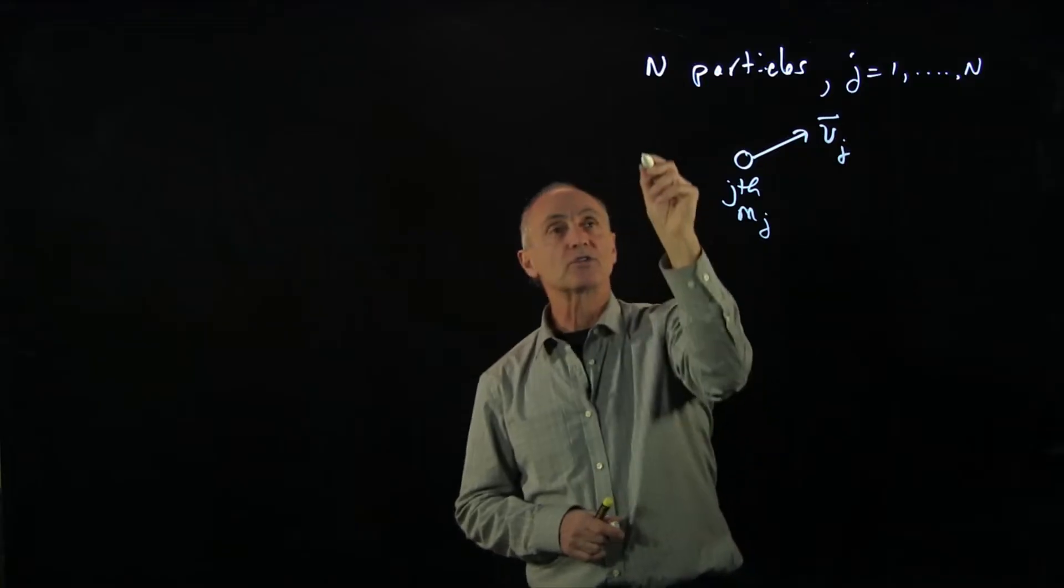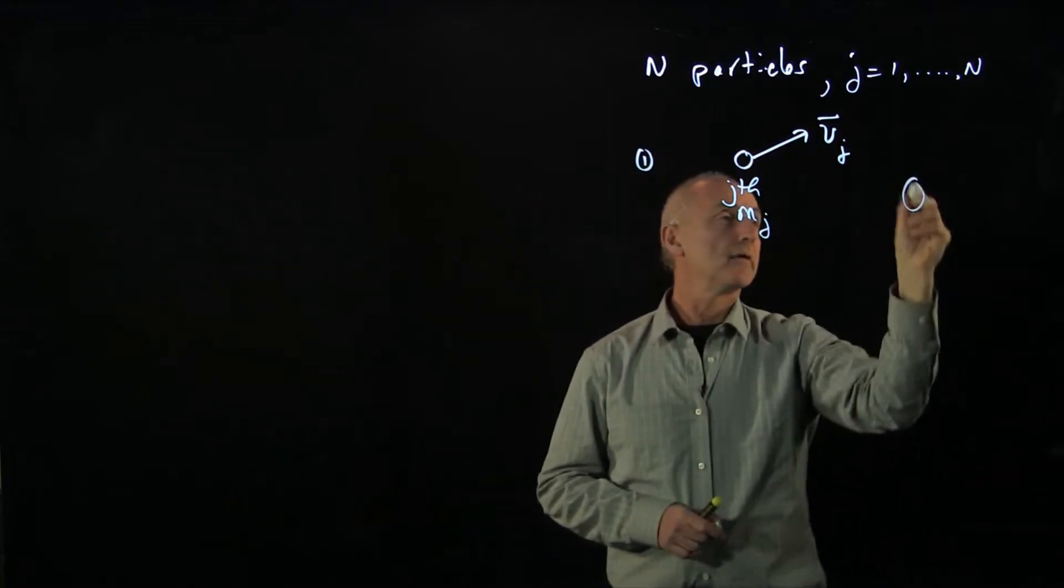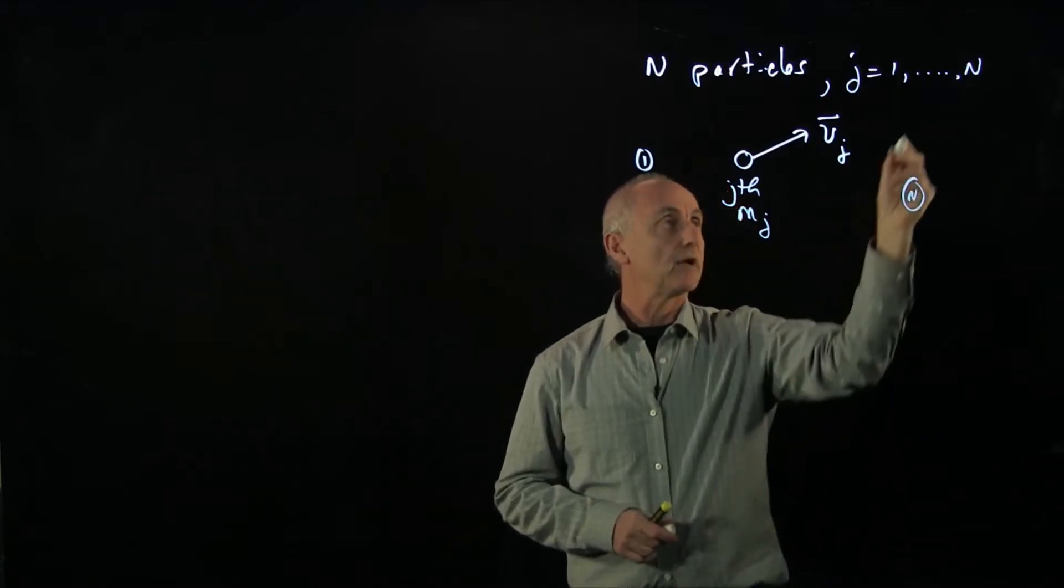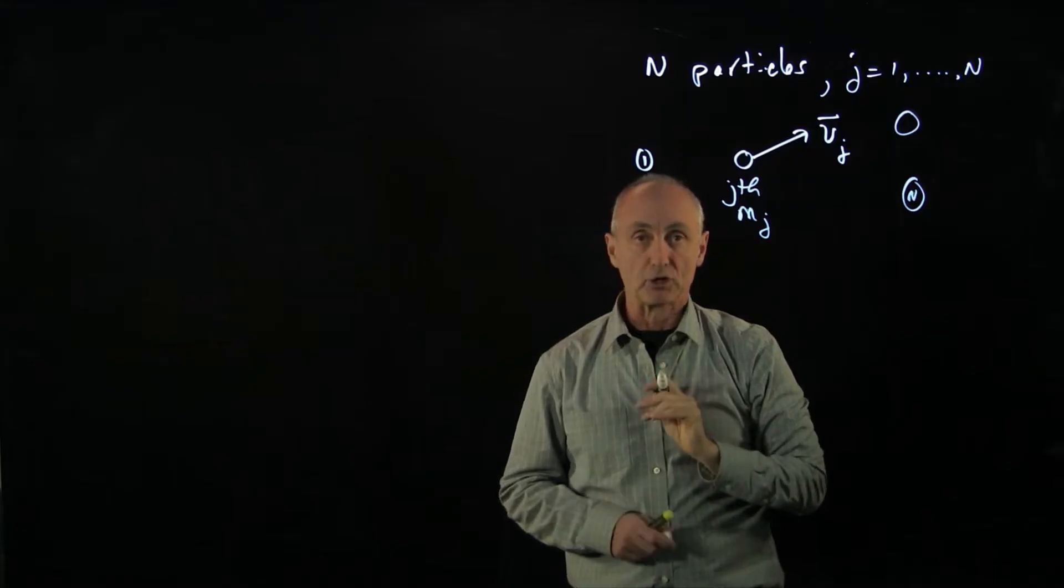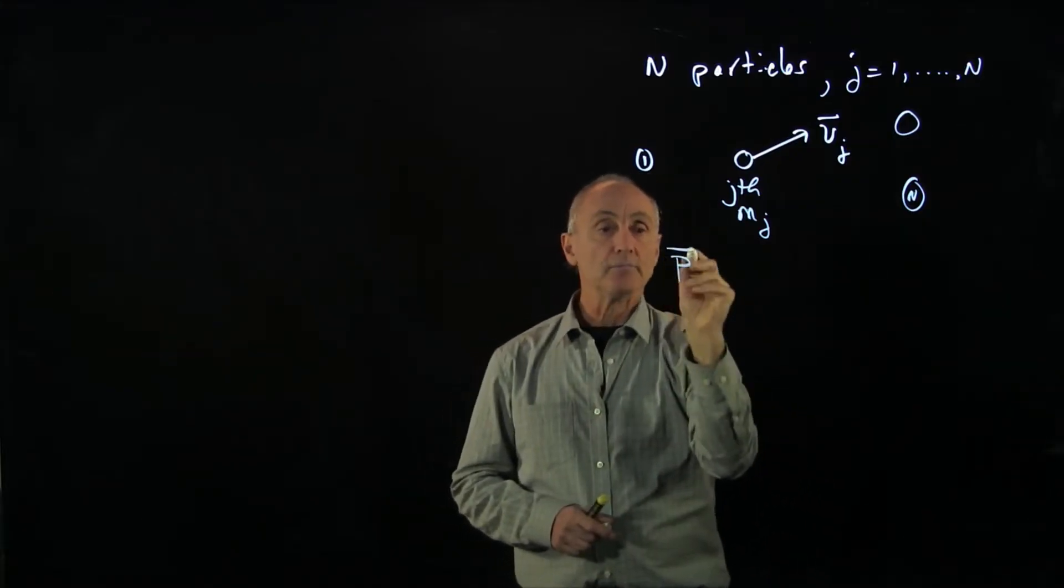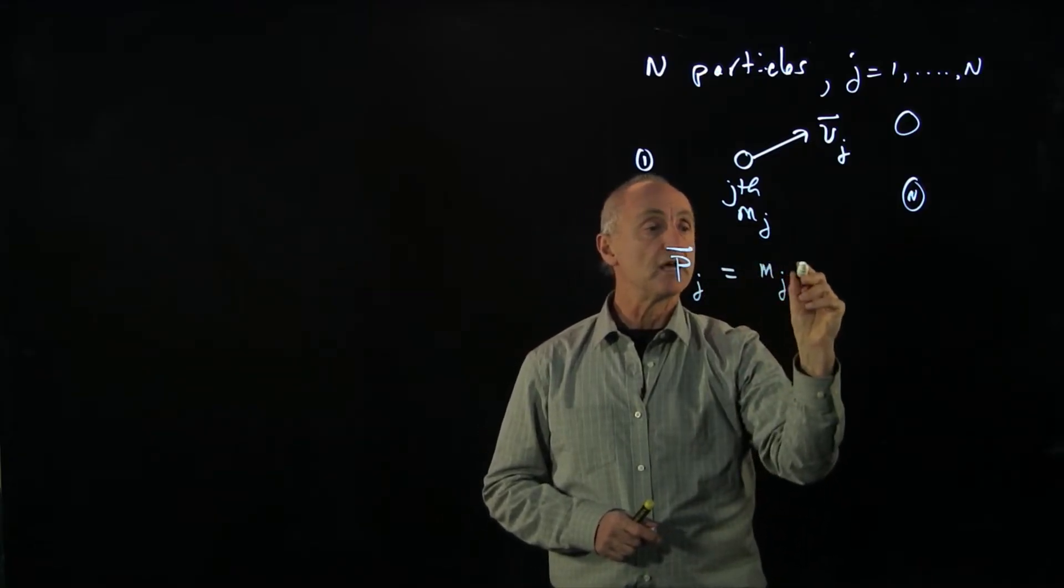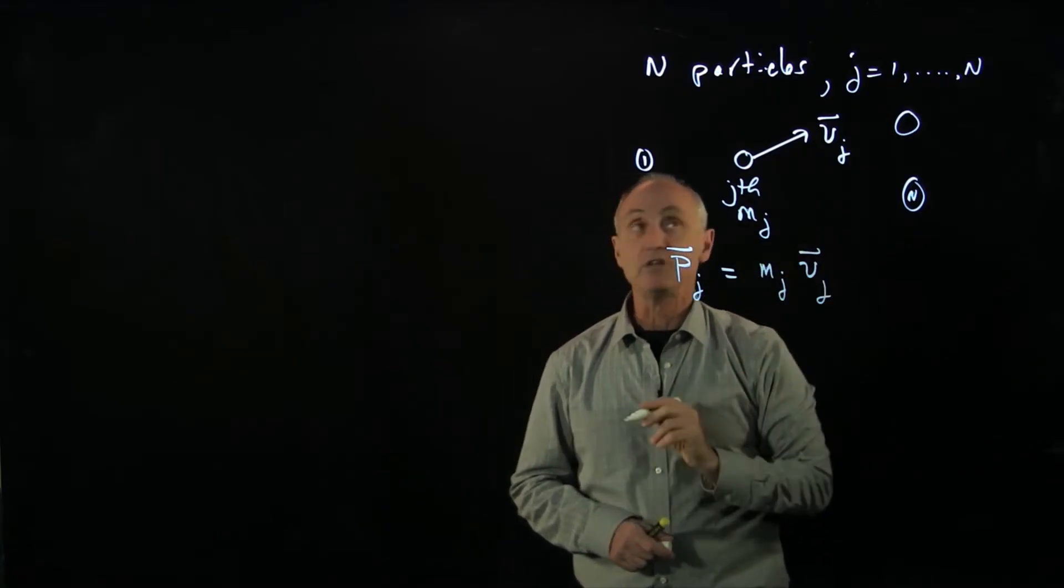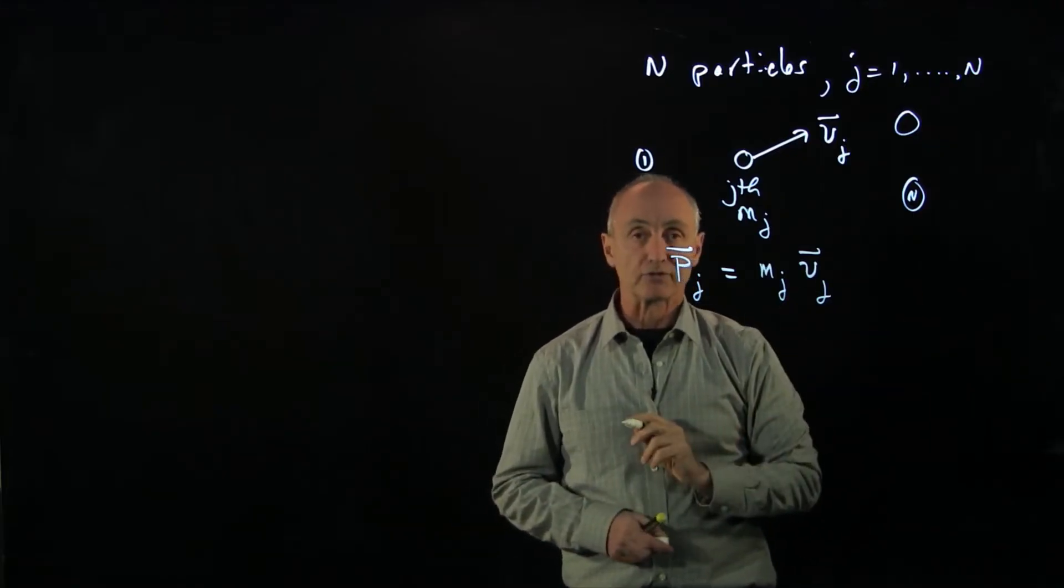Now, recall in our system, we have many other particles. We can call that one 1, this one, and we have lots of different particles in the system. And this just represents an arbitrary particle in that system. And the momentum of the j-th particle is just the mass mj times the velocity vj. And again, we're assuming some fixed reference frame.